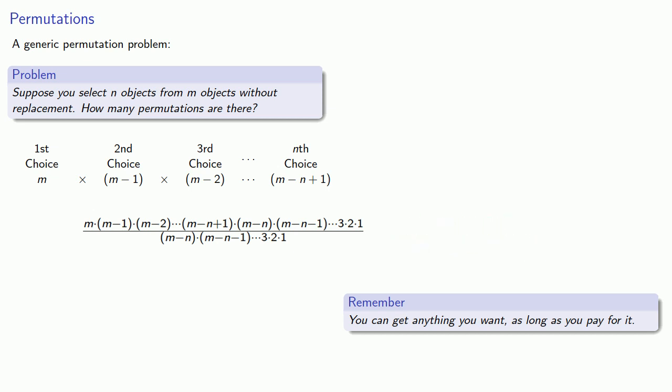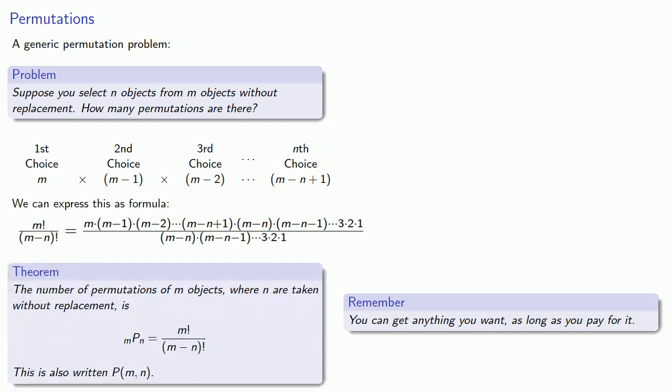And, if we look at this, our numerator is M factorial and our denominator is M minus N factorial. And, so, this leads us to the following result. The number of permutations of M objects where N are taken without replacement is given by the formula. Now, there's a couple of variants on this formula. For example, this might be written this way.